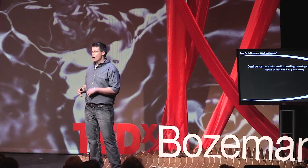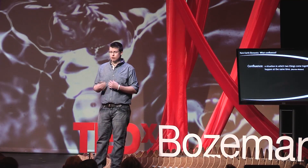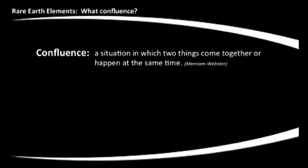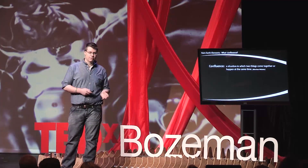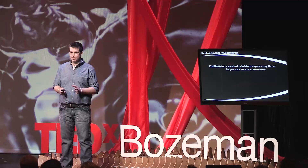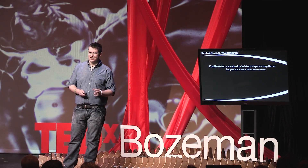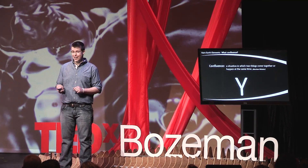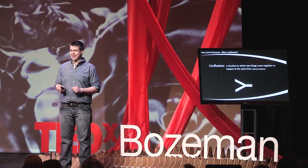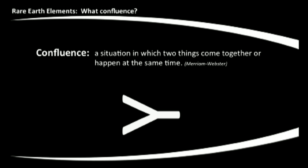When I started looking at how I could integrate my research into a TED talk, I decided to start at the beginning and look at what a confluence was. A confluence is a situation in which two things come together or happen at the same time. I'm an engineer — I like simple, straightforward. So I wanted a symbol that best represented a confluence. If you take a Y and turn it on its side, you get really nice angles and a nice confluence symbol, which we'll use for the rest of the presentation.